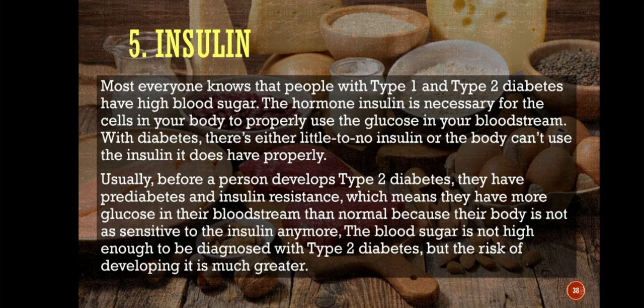Number 5: insulin. People with type 1 and type 2 diabetes have high blood sugar. The hormone insulin is necessary for the cells in your body to properly use the glucose in your bloodstream. With diabetes, there is either little to no insulin or the body can't use the insulin it does have properly. Usually, before a person develops type 2 diabetes, they have pre-diabetes and insulin resistance, which means they have more glucose in their bloodstream than normal because their body is not as sensitive to insulin anymore.